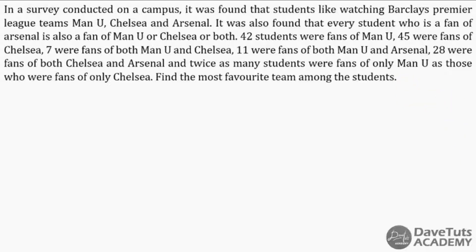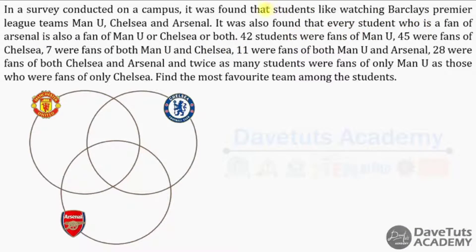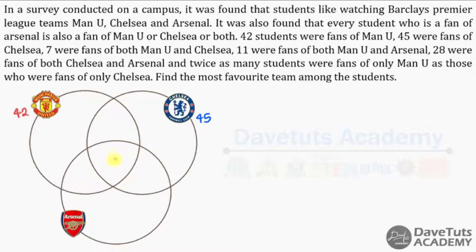Our Venn diagram will help us dissect the information. 42 students are fans of Man U and 45 are fans of Chelsea. 7 students were fans of both Man U and Chelsea. As a rule of thumb, we first look at the point of common interest — the center region where all three overlap — and call that X. So the region for only Man U and Chelsea becomes 7 minus X.